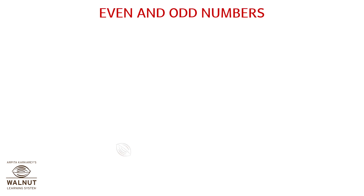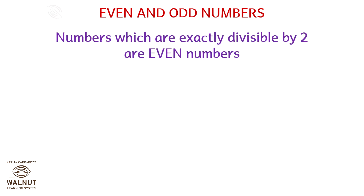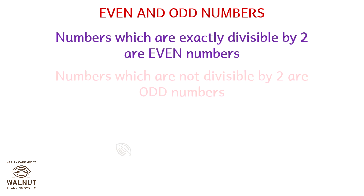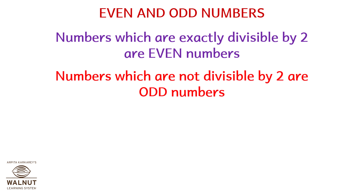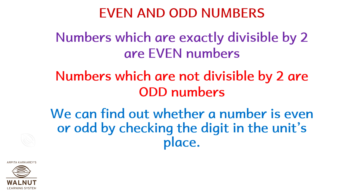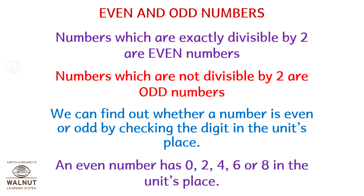Even and odd numbers — you obviously know that. Numbers which are exactly divisible by two are even numbers; numbers which are not divisible by two are odd numbers. We can find out whether a number is even or odd by checking the digit in the units place. An even number has 0, 2, 4, 6, or 8 in the units place.